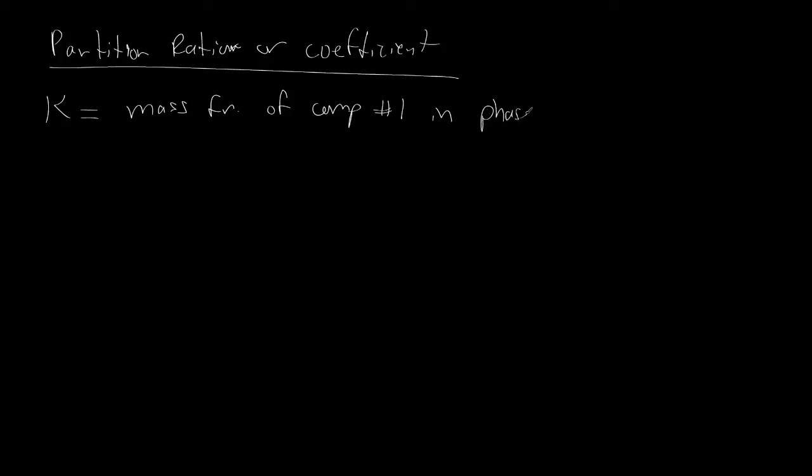The first one is to use what they call a partition ratio or a partition coefficient. And this is called K, and we use K quite a bit but K is a common term used for thermodynamic separation variables. It is defined as the mass fraction of component 1 in phase 1,